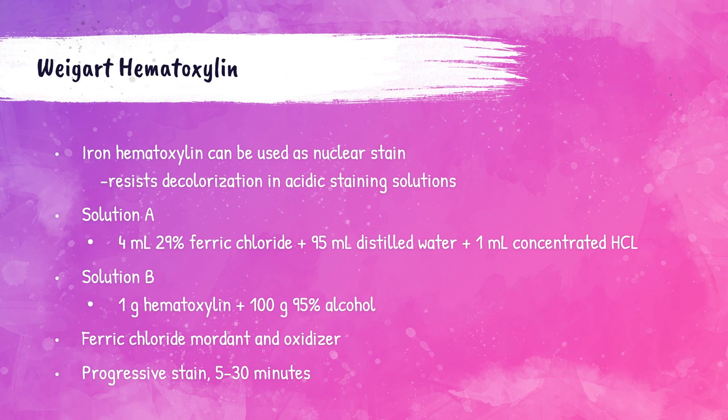Iron hematoxylin can also be used for staining the nucleus. It resists decolorization in acidic staining solutions. Ferric chloride is a strong oxidizer and serves as both the mordant and oxidizer for Weigert hematoxylin, which is a progressive stain. Solution A: 4 mL of 29% ferric chloride, 95 mL distilled water, and 1 mL concentrated hydrochloric acid. Solution B: 1 gram of hematoxylin in 100 mL of 95% alcohol. Solutions A and B are mixed in equal parts and can be used for two to three days.